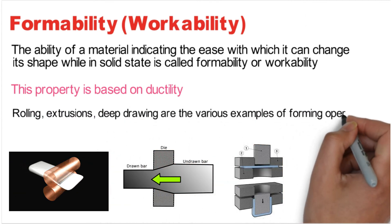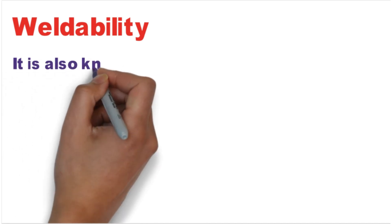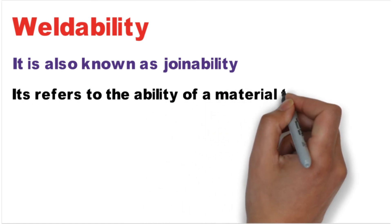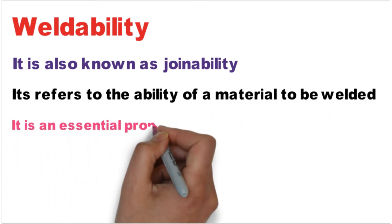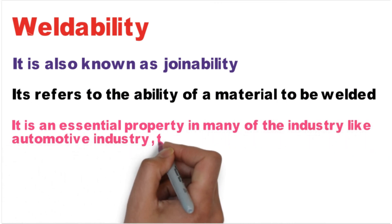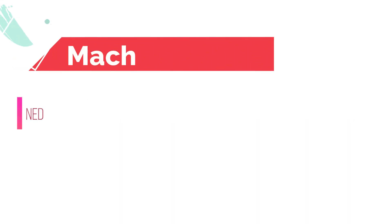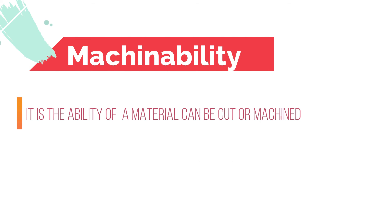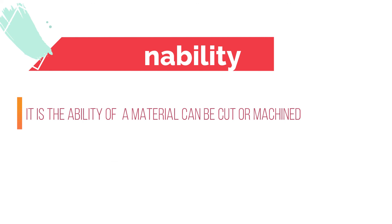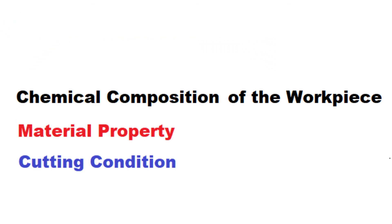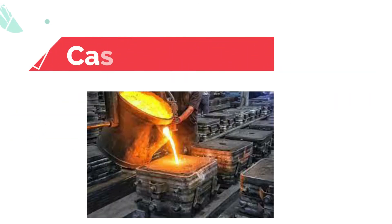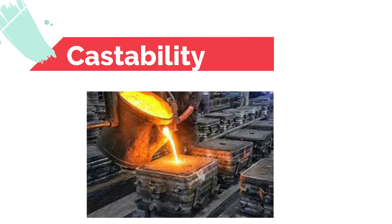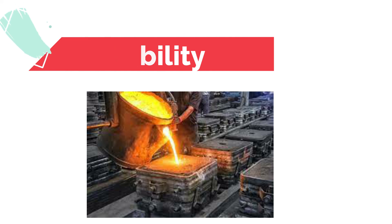The next property is weldability, defined as the capacity of a metal to be welded under fabrication conditions in a specifically designed structure to perform satisfactorily for its intended service. The next property is machinability, defined as the ease with which a material can be cut or machined by cutting tools in a machining operation with a satisfactory surface finish. Machinability depends on the chemical composition of the workpiece, mechanical properties, cutting conditions, etc. The next property is castability — the ease with which a material can be given a solid shape from liquid state. Factors affecting castability are solidification rate, shrinkage, porosity, etc.